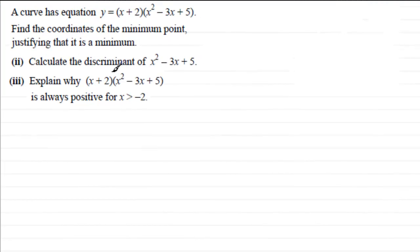Now in the next two parts of this question, we've got to calculate the discriminant of x squared minus 3x plus 5, and also explain why x plus 2 multiplied by x squared minus 3x plus 5 is always positive for x greater than minus 2.